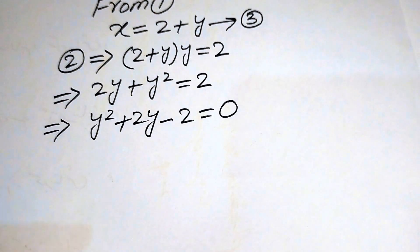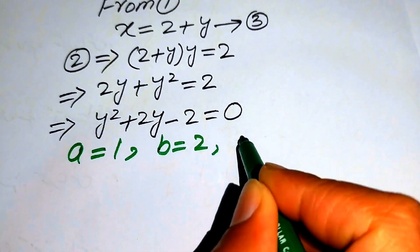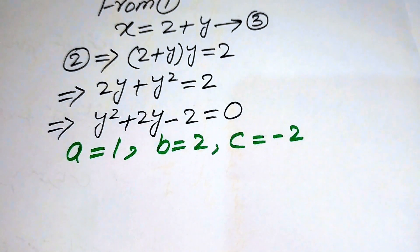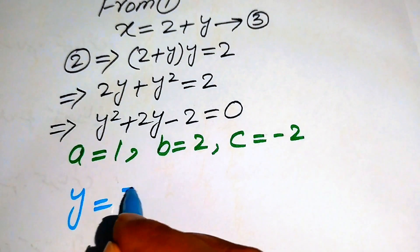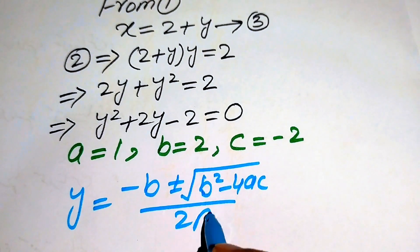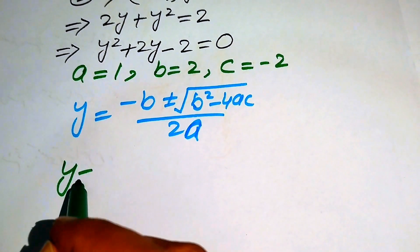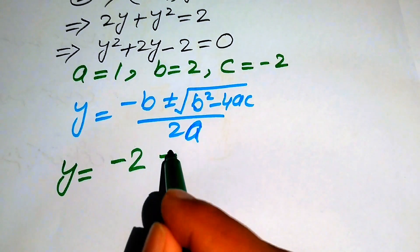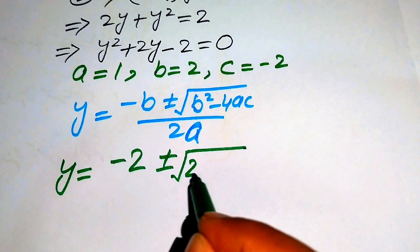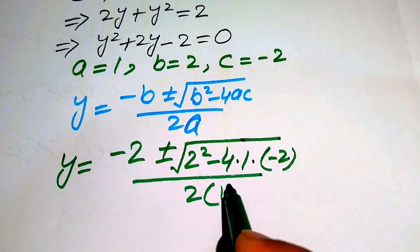This equation is now in quadratic form and we can use the quadratic formula to solve it. The coefficients are a equals to 1, b equals to 2, and c equals to minus 2. The quadratic formula gives y equals to minus b plus or minus square root of b squared minus 4ac, all divided by 2a.